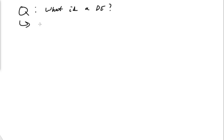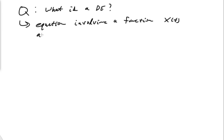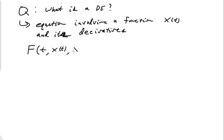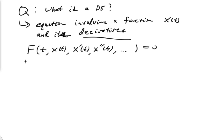Most generally, a DE is an equation involving a function x of t and its derivatives. So I have some big function F — it could be a function of t, x of t, x prime of t, x double prime of t, and so on — and we set it equal to zero. That is the most general form.